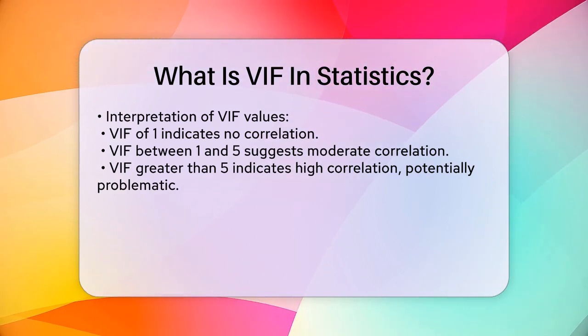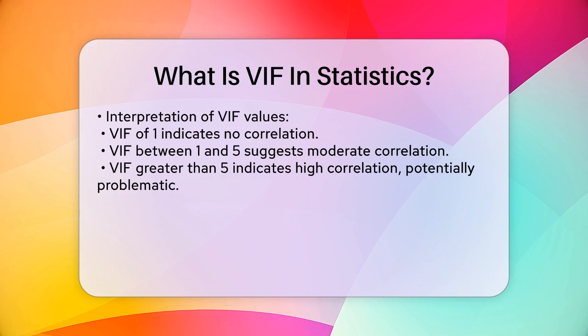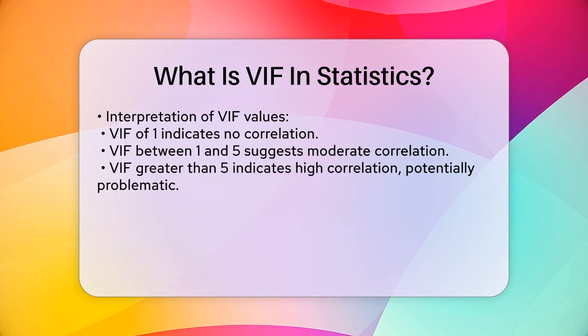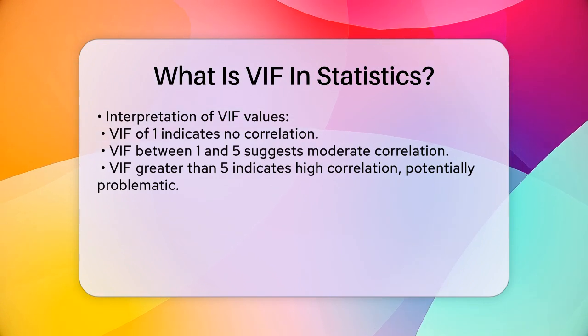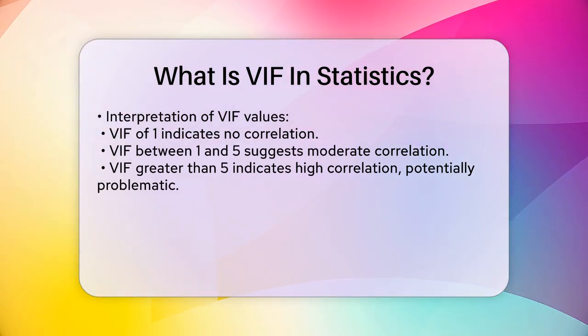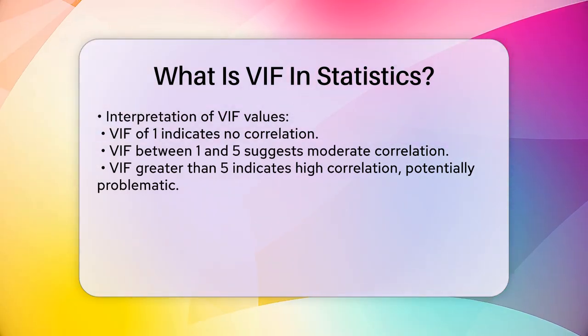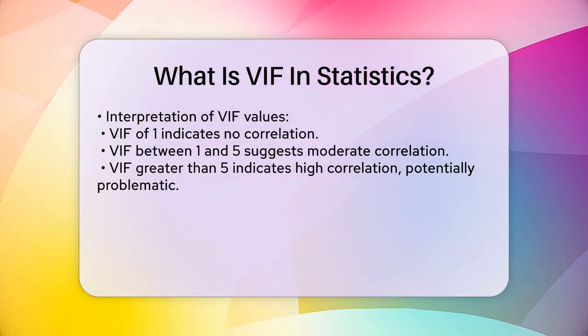Generally, if the VIF is between 1 and 5, it's considered moderately correlated. But if it's greater than 5, it's highly correlated and could be a problem.